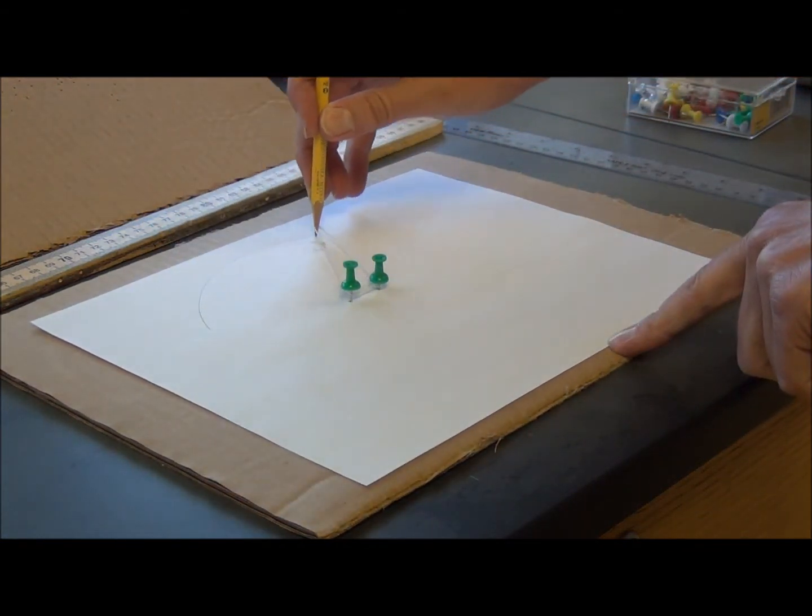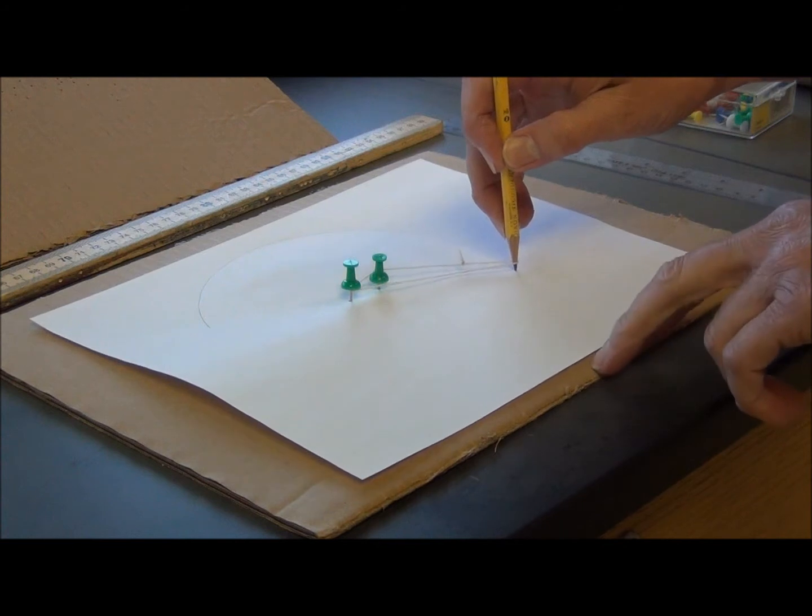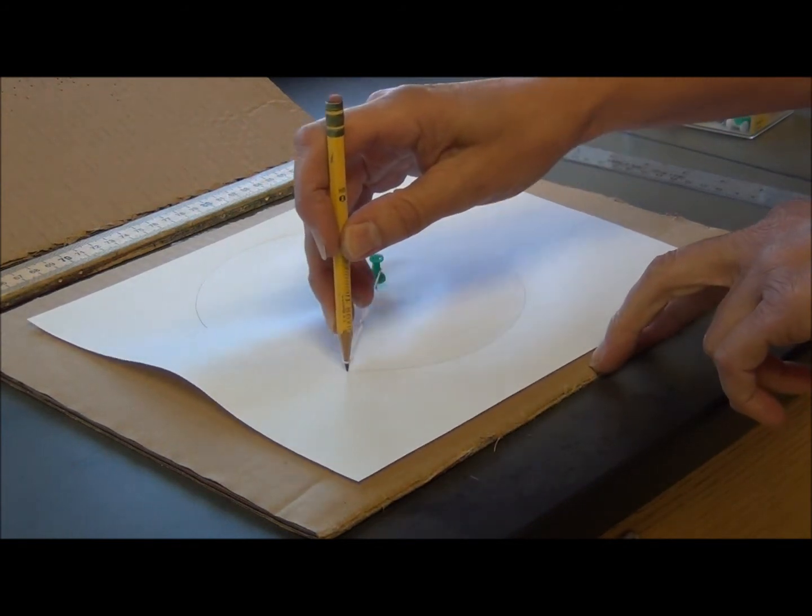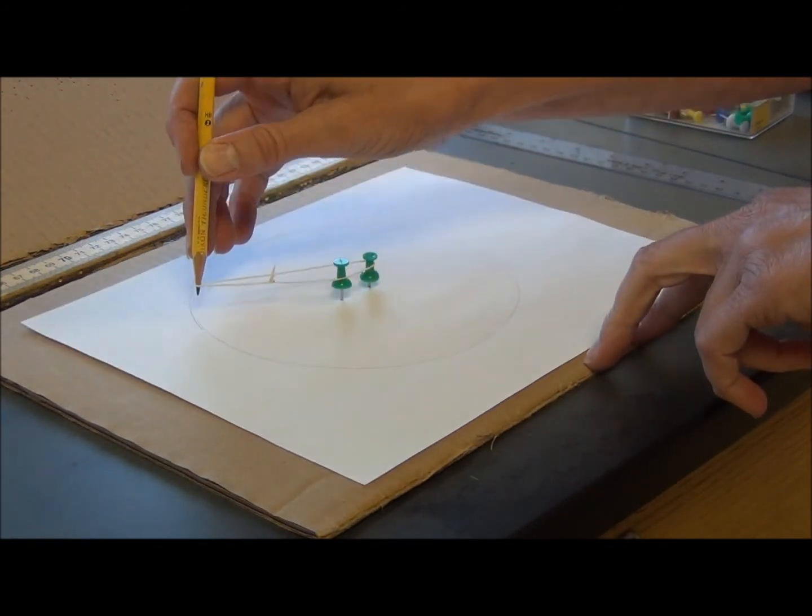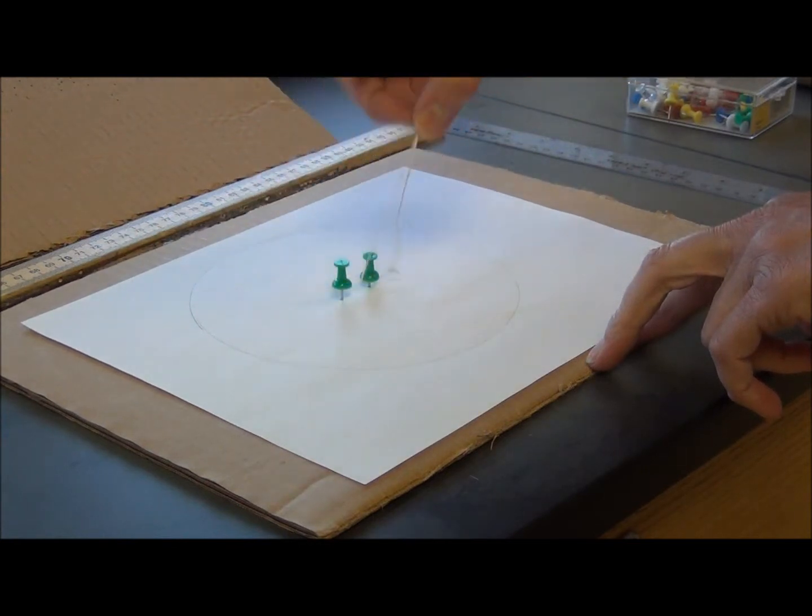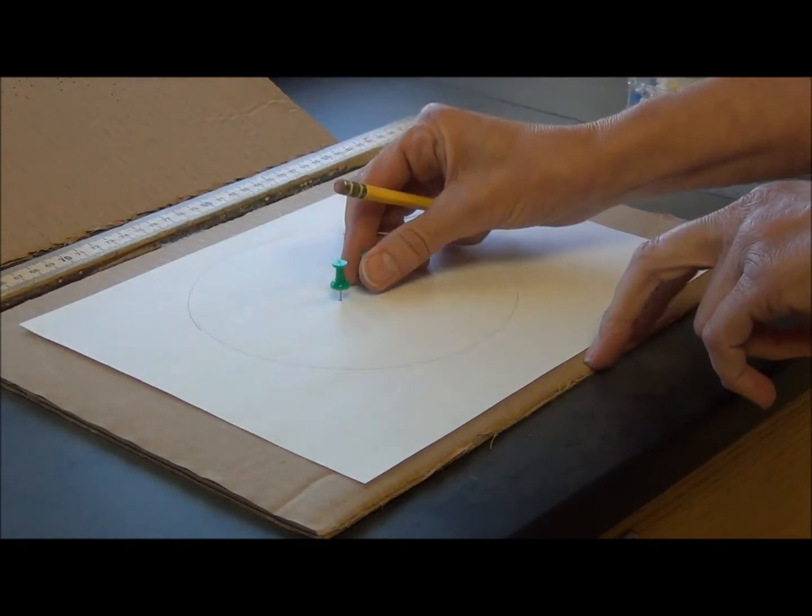This works best with a pencil. Draw as you would a, there used to be a game called a spirograph. Draw this shape. Take the push pins and the string away.